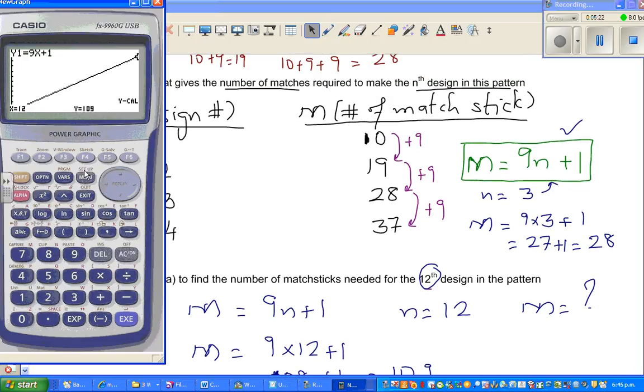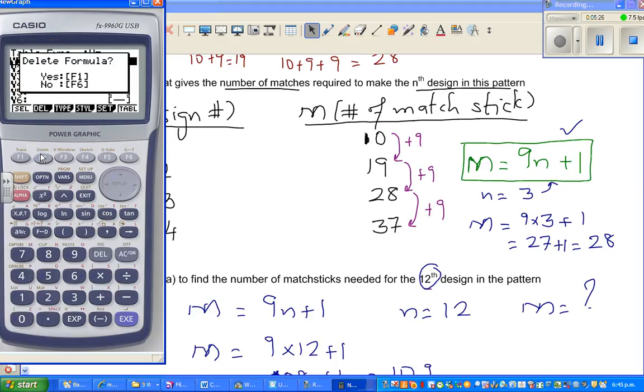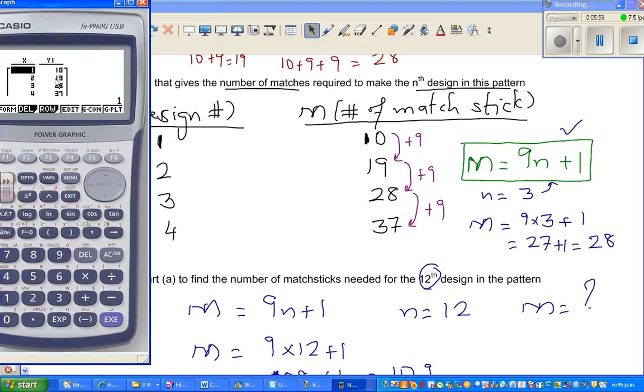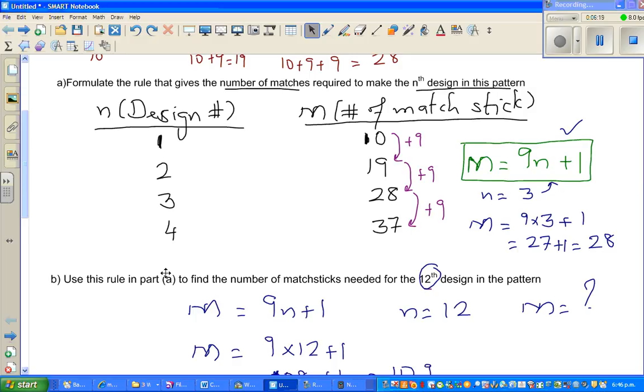Now, the good way, you're allowed a graphic calculator, so go to table and type in that equation. Your y you can compare with m, and your n you can compare with x. So I'm going to type in 9x plus 1. n you're relating with x. Then go to set, and I set the table from 1 to 12, because we want to see whether these numbers match up with the table on the calculator. Can you see when n is 1, or when x is 1, y is 10, or when n is 1, m is 10. And let me scroll down. 19, 28, 37. I just want to check whether the answer that I've got is right. When n is 12, your m is 109.